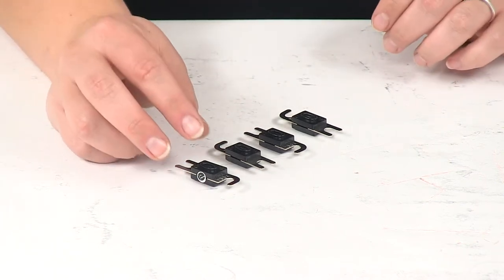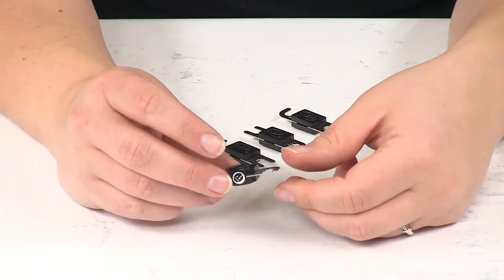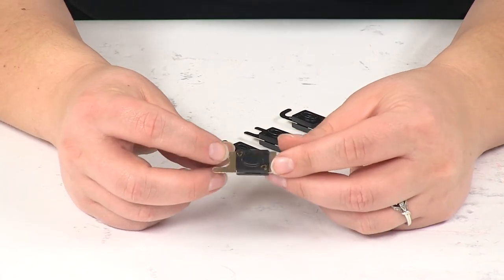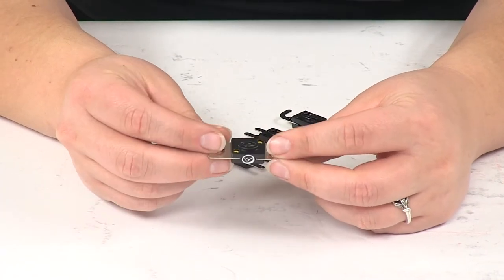Now these 250 amp fuses are going to break the circuit on your electric winch if the motor gets too hot.